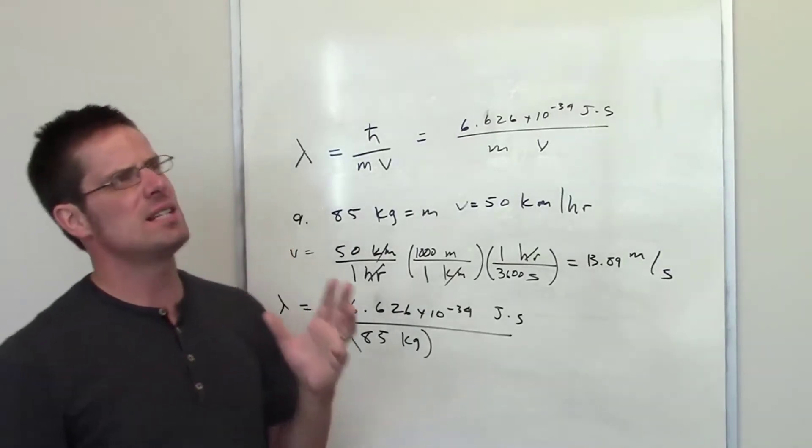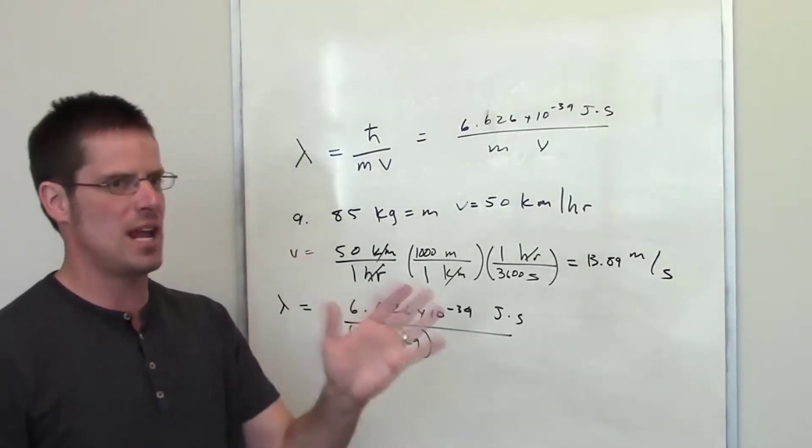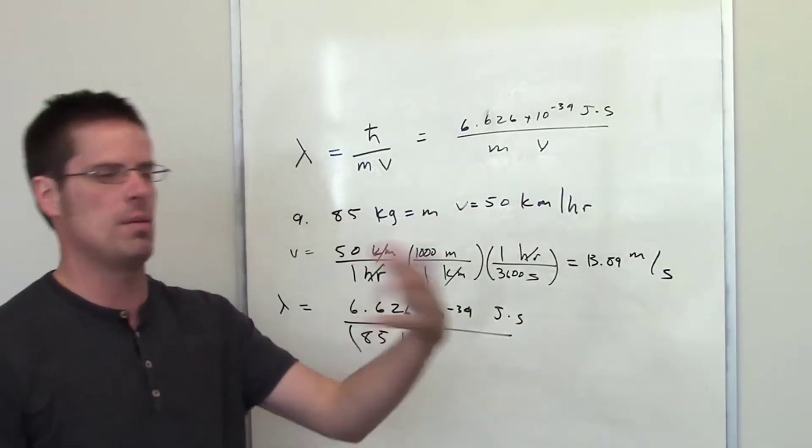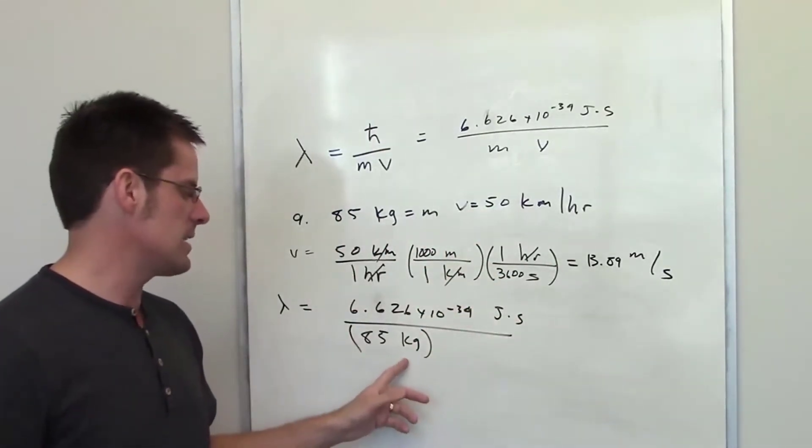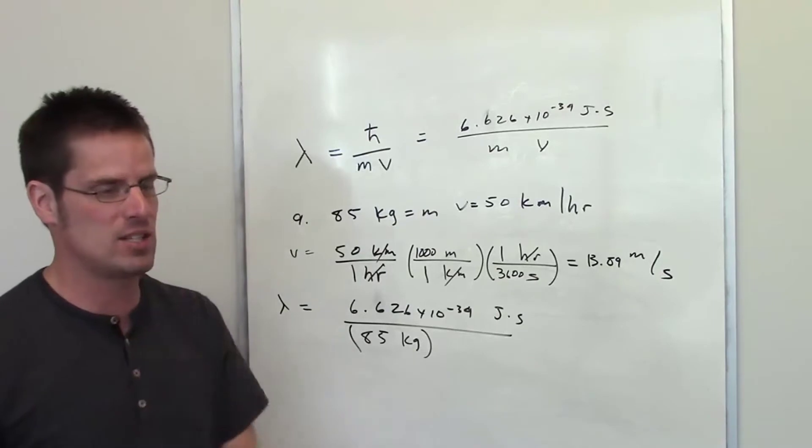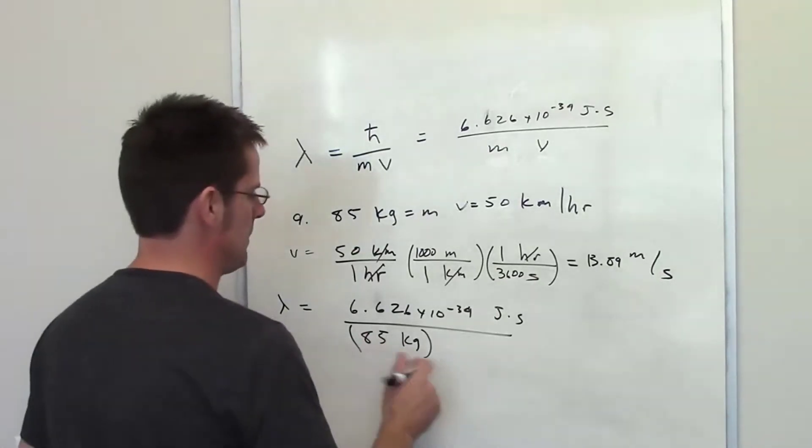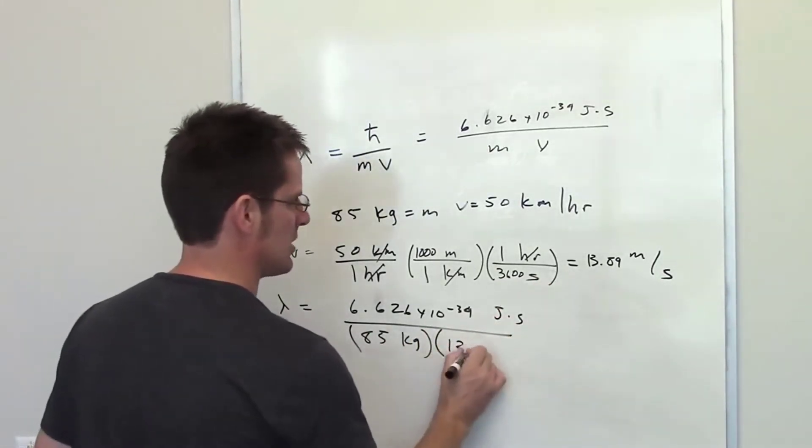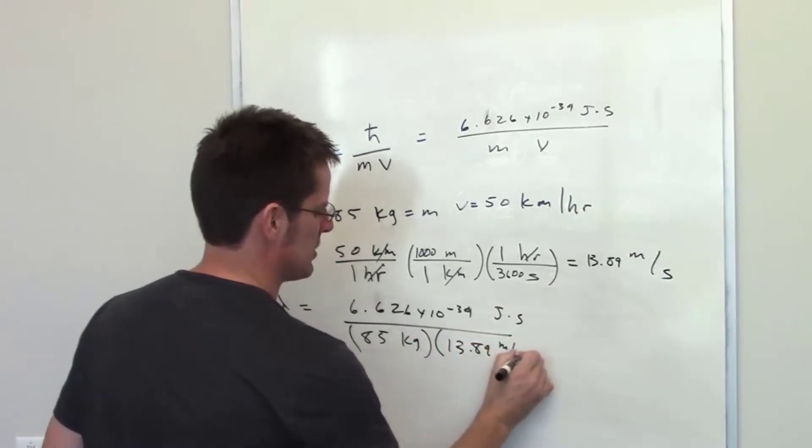The mass of this person is 85 kilograms. I can keep that in kilograms because in the SI system for units, kilograms is actually considered the base unit, even though it has a kilo in front of it. Kilograms is the one exception, so mass we keep in kilograms. I'll go ahead and throw this guy down. The velocity is 13.89 meters per second.